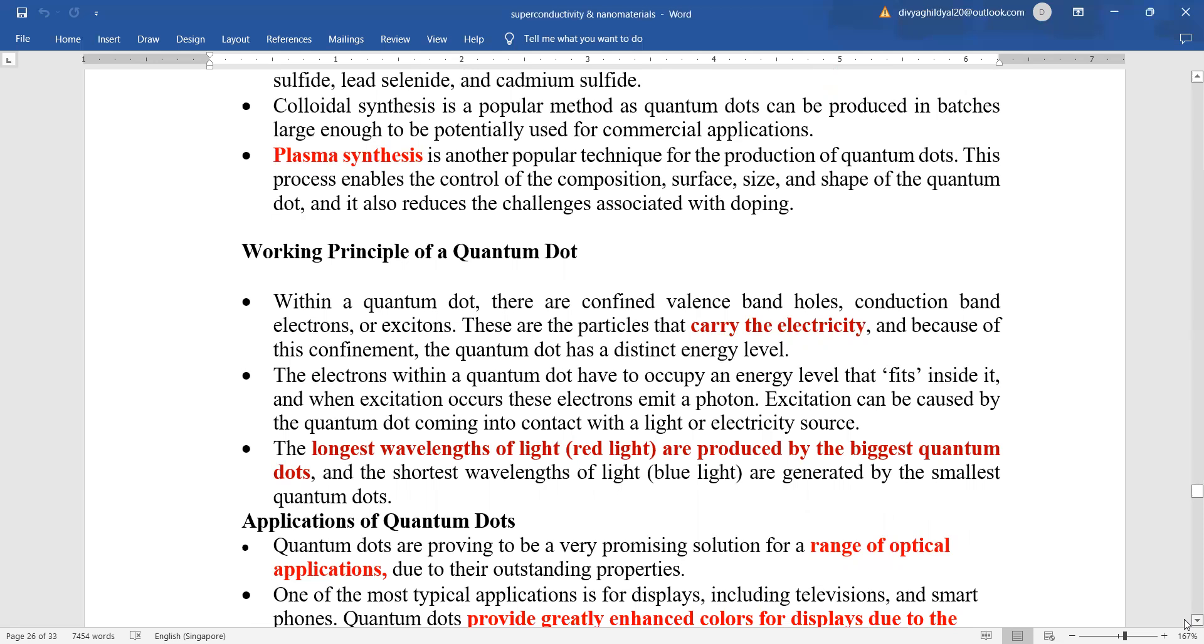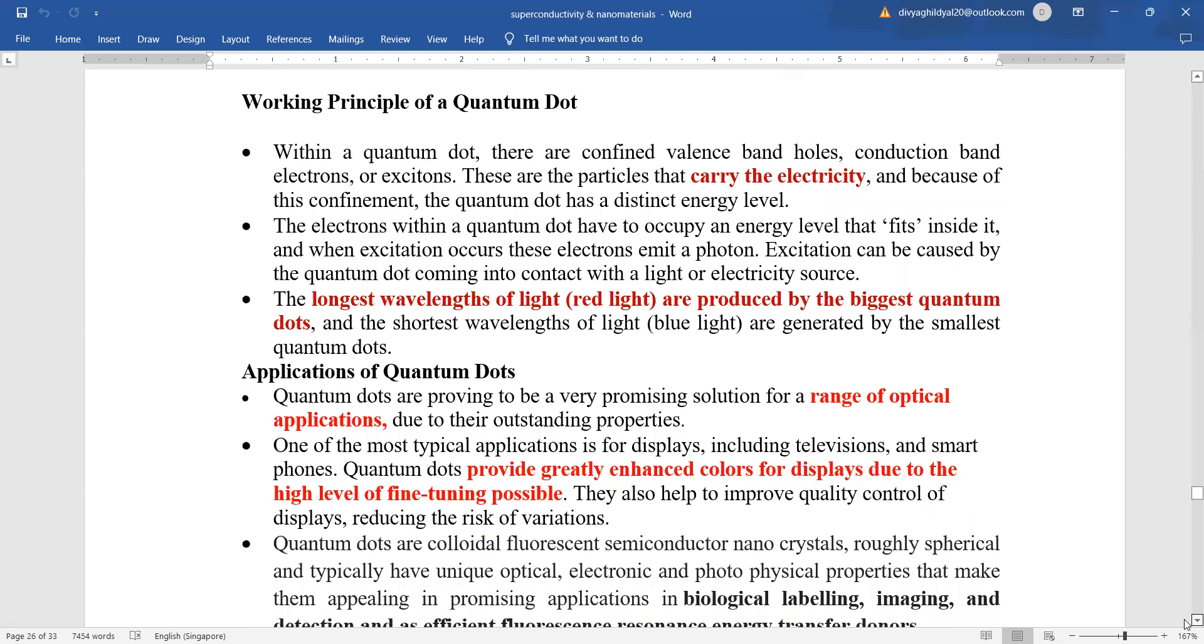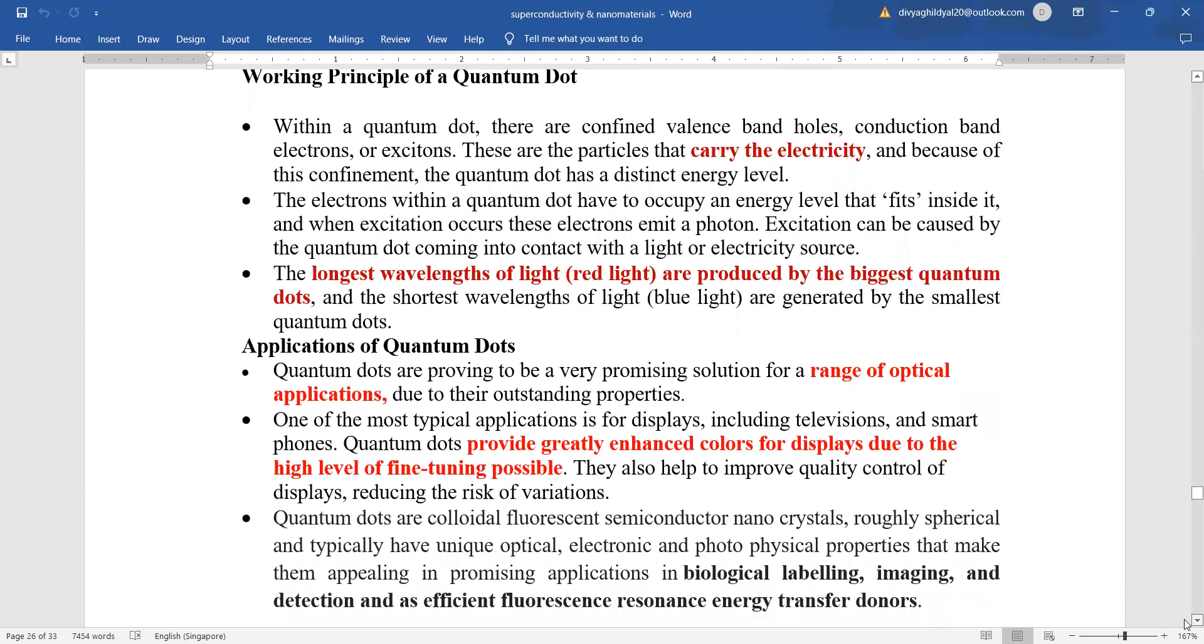Now, the working of quantum dots is that they have confined valence band holes and conduction band electrons. These are particles that carry electricity and because of this confinement, the quantum dot has a distinct energy level. The longest wavelength of light is produced by the biggest quantum dot and the shortest wavelength is generated by the smallest quantum dot.